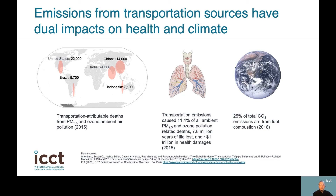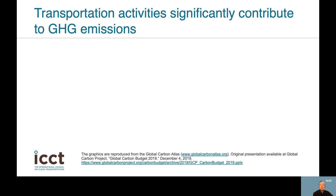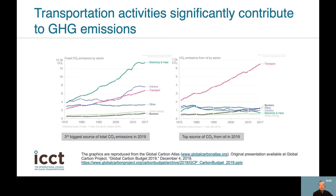In 2017, transportation activities were responsible for almost a fifth of energy-related CO2 emissions. Moving the world's population from place to place on a daily basis takes a lot of energy, and unfortunately that means an equally huge amount of emissions. These two graphs show a consistent trend of how transportation consumes energy and emits greenhouse gases. Transportation is the third biggest source of total CO2 emissions and the top source of CO2 emissions from oil consumption in 2019.